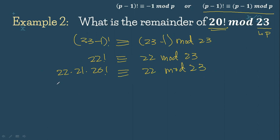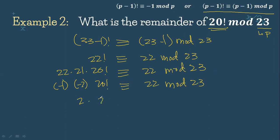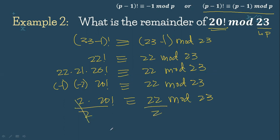So: 22 minus 23 is negative 1; 21 minus 23 is negative 2; 20 factorial is congruent to 22 mod 23. Negative 1 times negative 2 is 2, so 2 times 20 factorial is congruent to 22 mod 23. Dividing both sides by 2, 20 factorial is congruent to 11 mod 23.